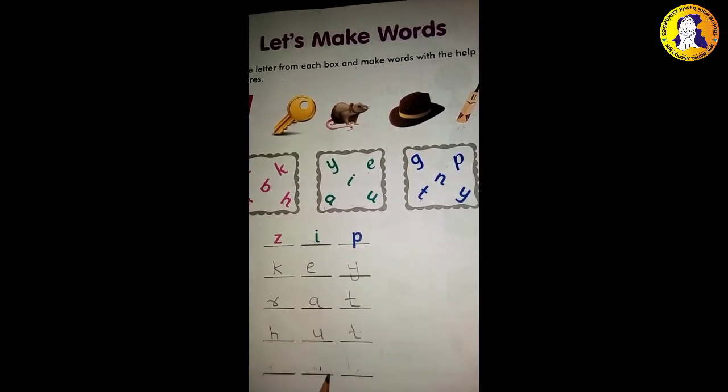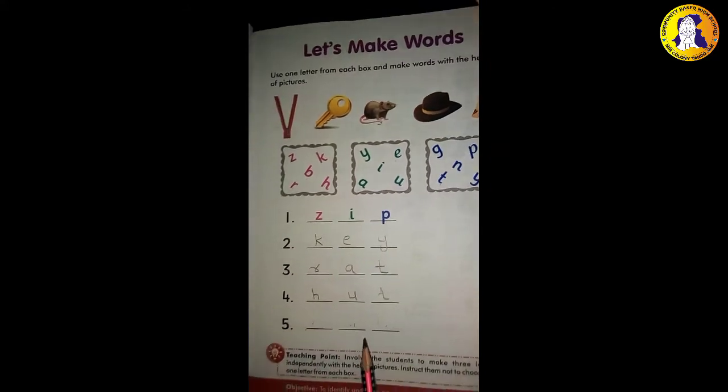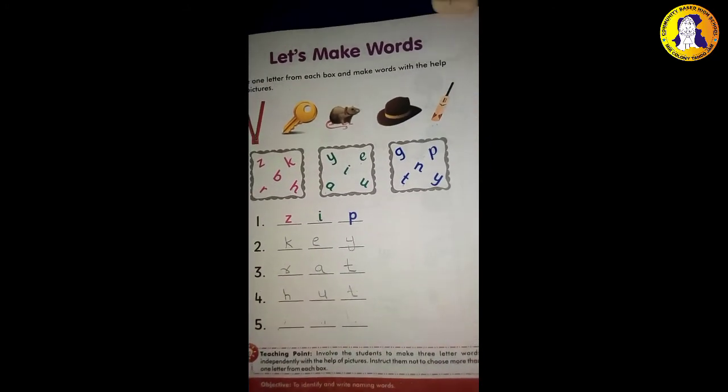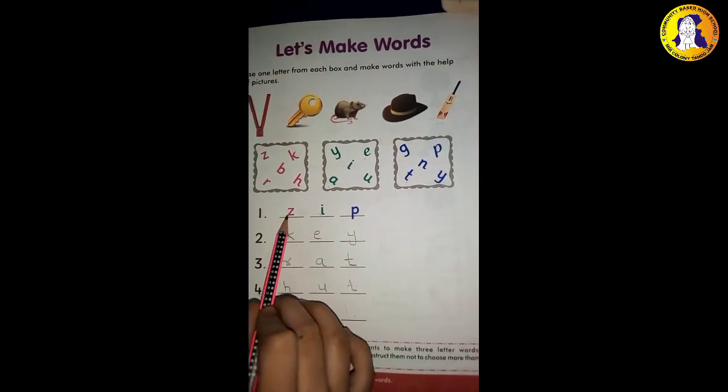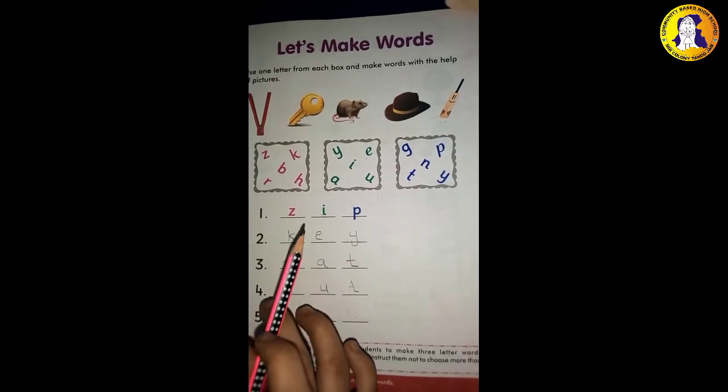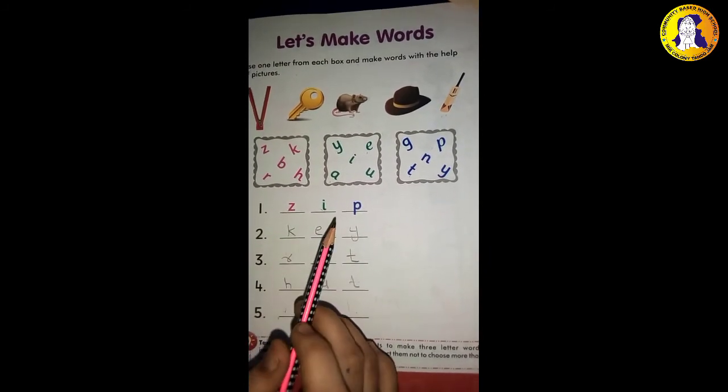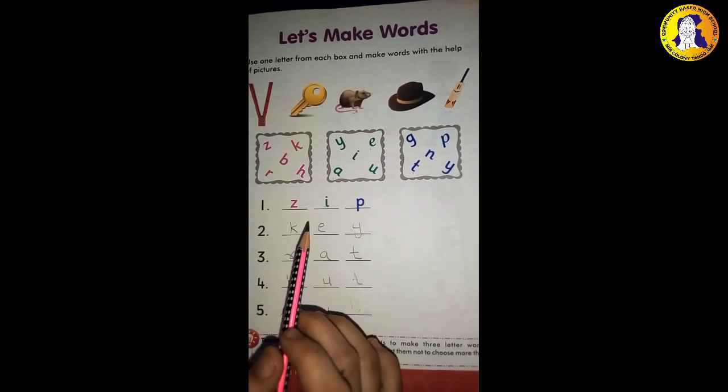So what is B-A-T? Bat. Okay kids, what do we learn? Three letter words. One, two, three. How many letters? Three letters. Three letters. What are they? Words are made.